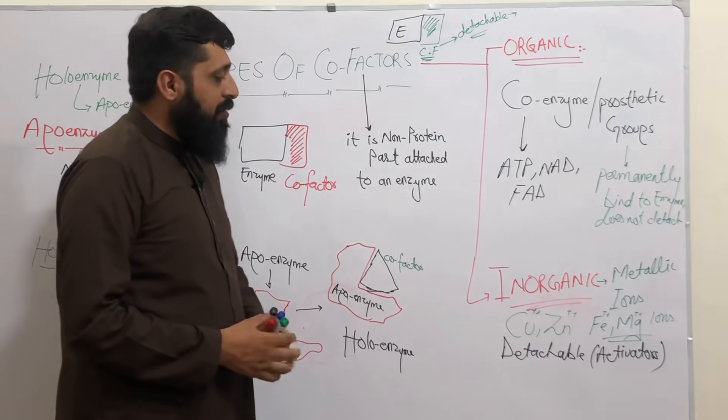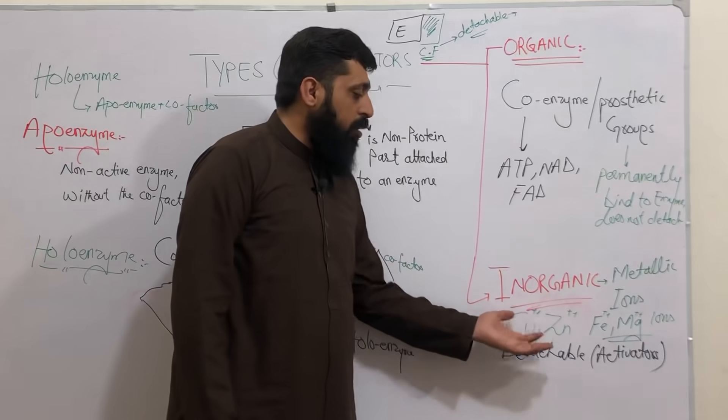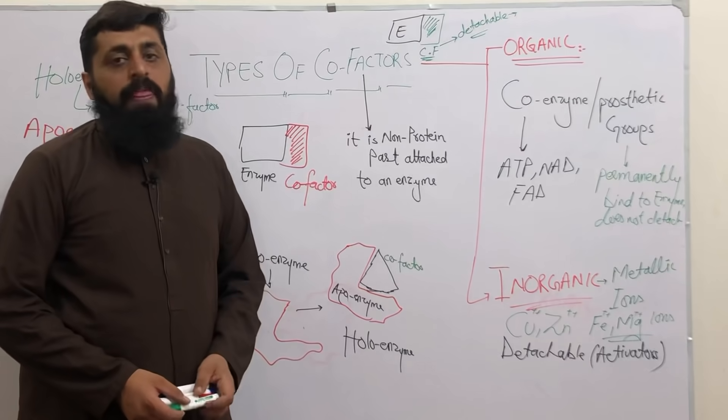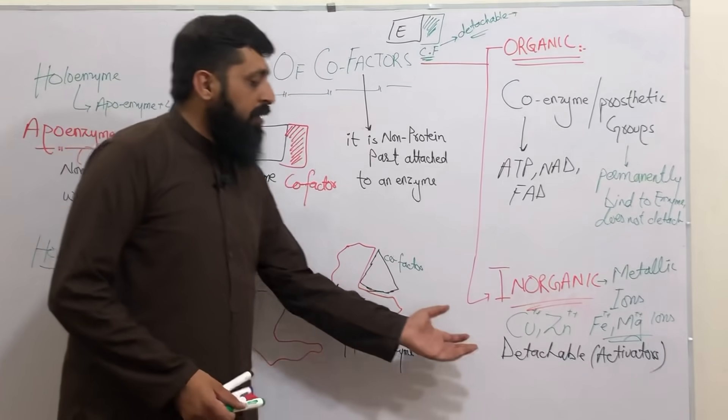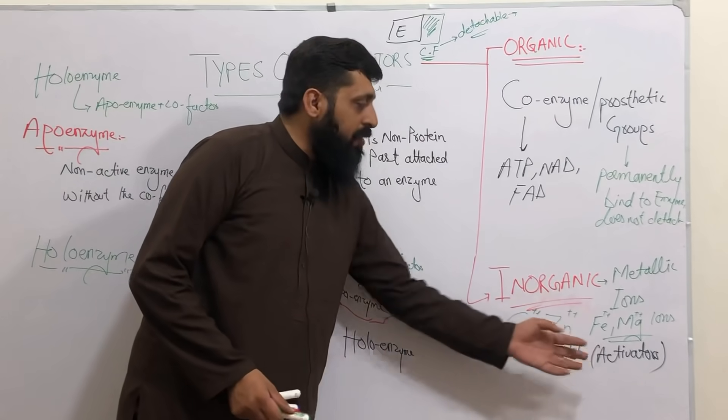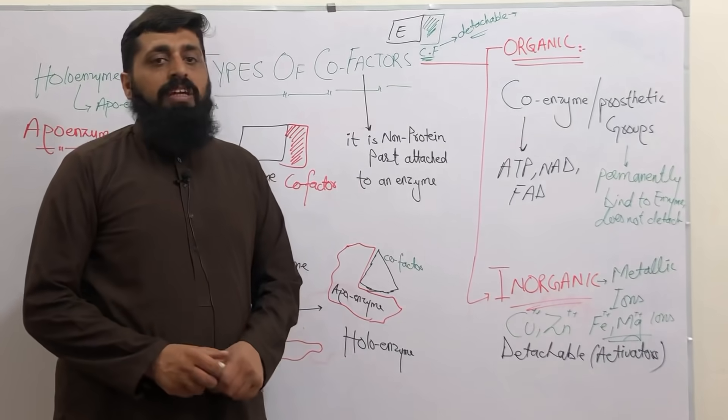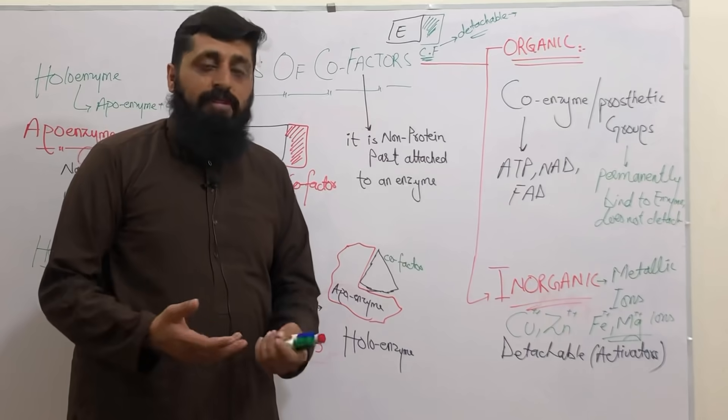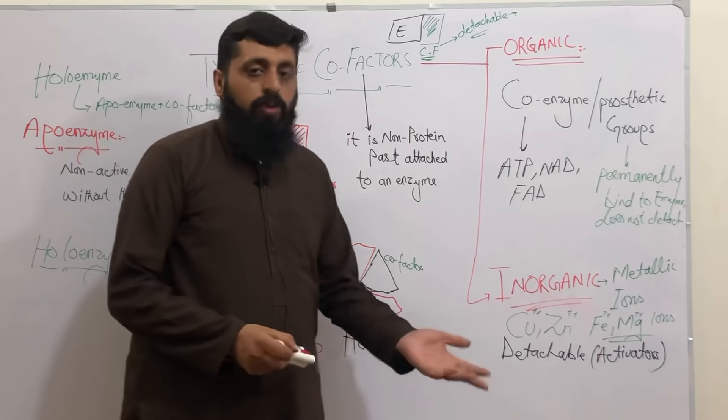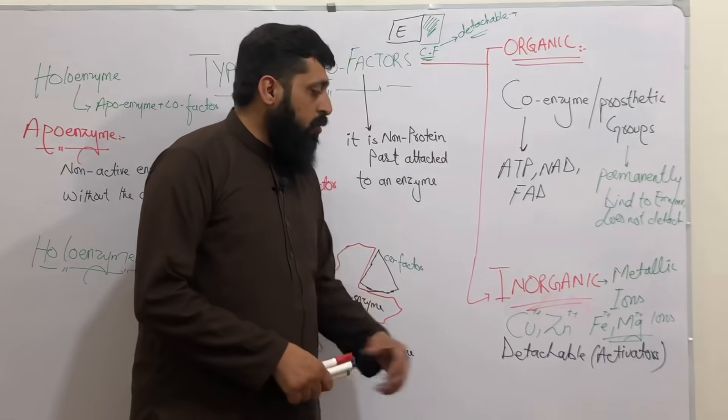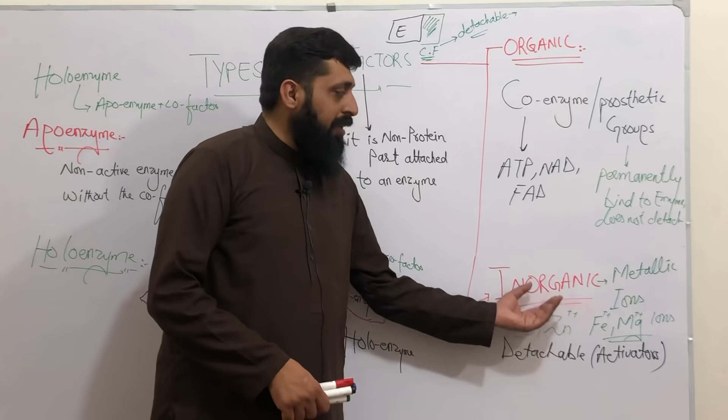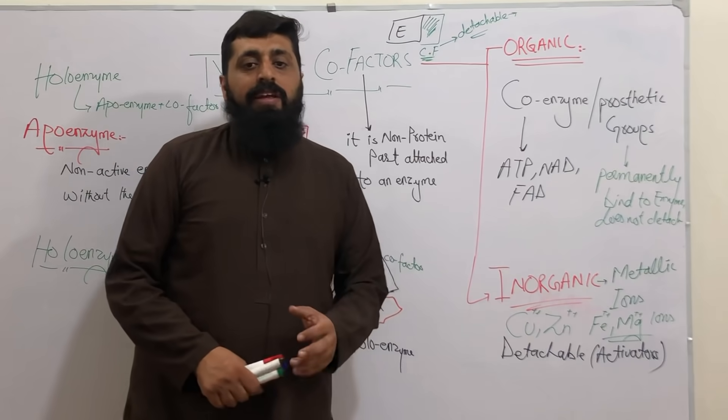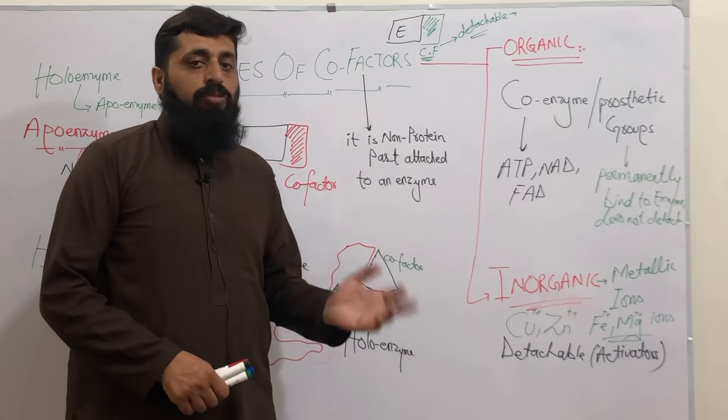Inorganic cofactors include ions like copper, zinc, iron, magnesium - these ions are found. These are detachable, or in other words, are also called activators. The word activate means to incite, to start something up, to make something go in a flow. These ions in the inorganic cofactors category are basically activators. They bind to the apoenzyme and start the catalytic process.